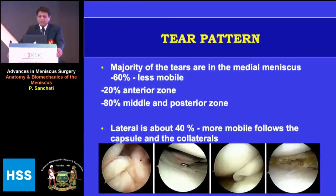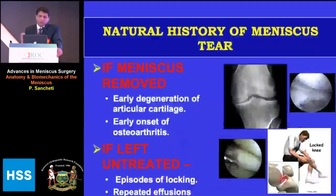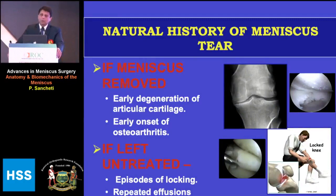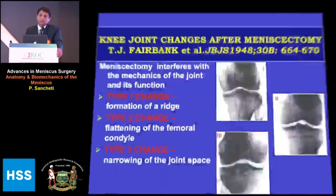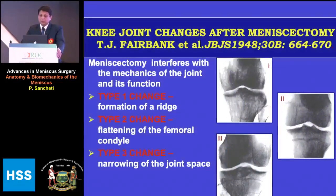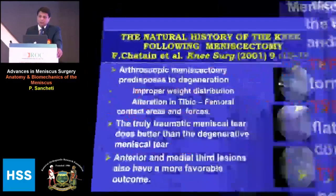Regarding tears, medial meniscus tears are more common than lateral tears. Most critically, if the meniscus is removed, the joint is prone to early arthritic changes, and therefore we must always think of preserving the meniscus. Whenever a meniscectomy — lateral or medial — is performed, it has been proven beyond doubt that it leads to osteoarthritis. These changes were described as far back as 1948 by Fairbank, but it is only in the last two decades that we have been actively talking about saving the meniscus.